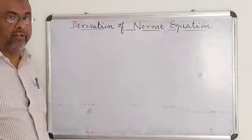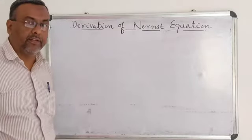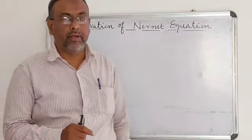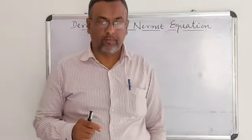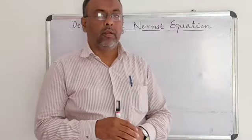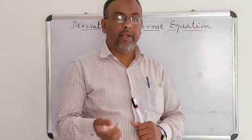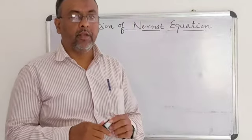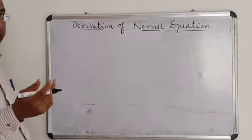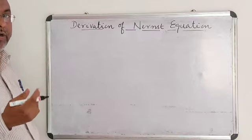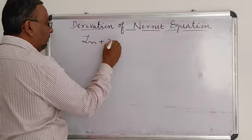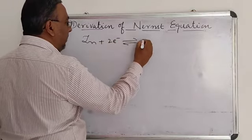To study this equation, let us consider an electrode dipped in a solution containing its own ions. For example, let us consider a zinc rod dipped in a solution containing zinc sulfate. When zinc is in contact with a solution containing zinc sulfate or its own ions, the following equilibrium is established.